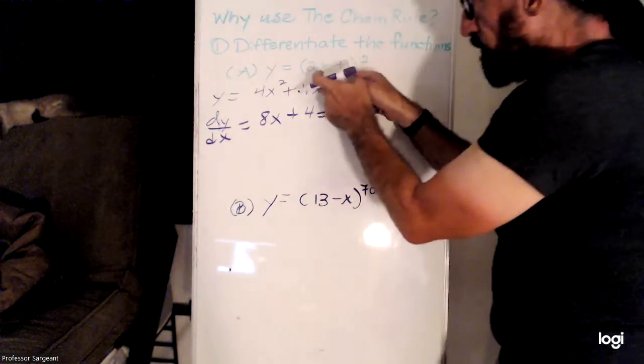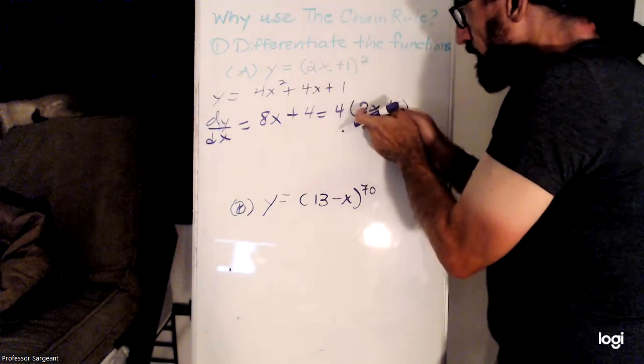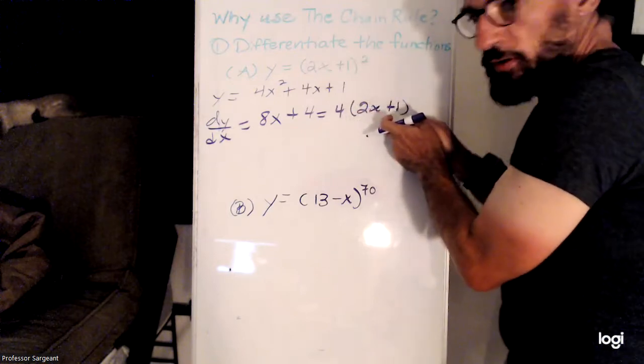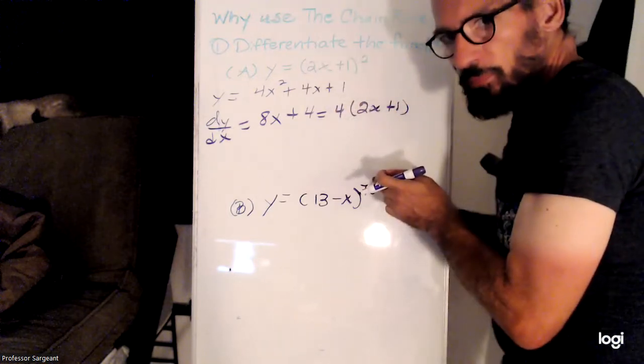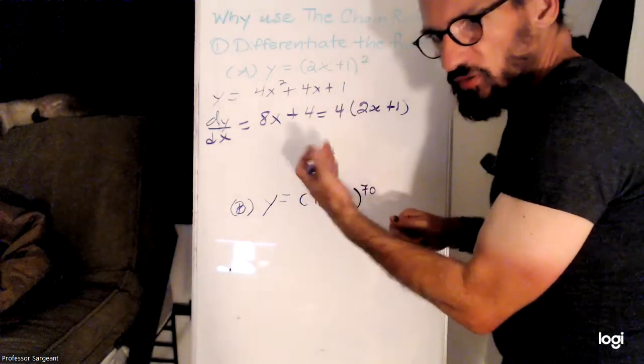...we have, since that wasn't x being squared, we've got 2x plus 1, but it's not double, it's x multiplied by 4 instead of 2.